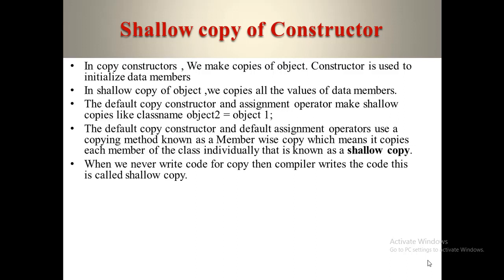When we never write code for copy, then the compiler writes the code. This is called shallow copy. It means when we never write any code explicitly for copying object 2 from object 1, then the compiler will automatically handle it. This is the shallow copy.